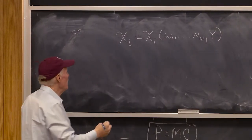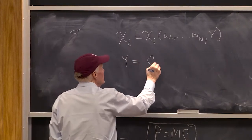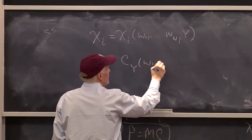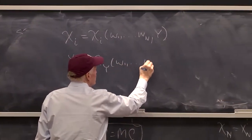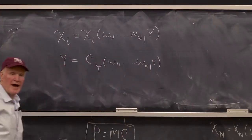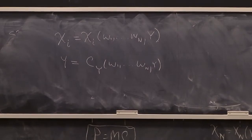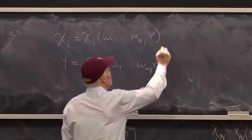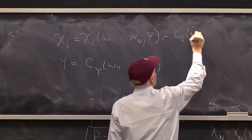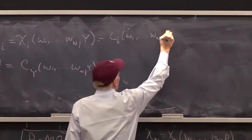So that's always true. And then we get Xi of W1 up to Wn and Y equals the conditional factor demand Xi of W1 up to Wn and Y. That's the optimality condition for Y — this is just Xi of W1 up to Wn and Y.